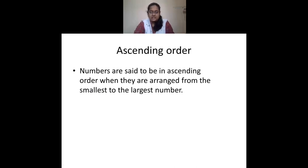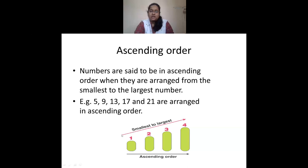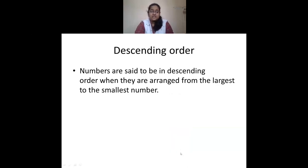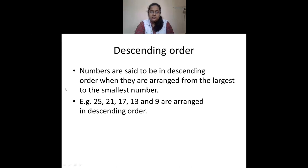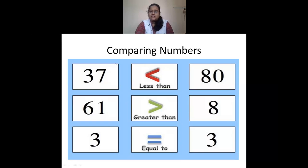We saw ascending and descending order. Ascending order: numbers arranged from smallest to largest. For example, 5, 9, 13, 17, 21 are in ascending order. Descending order: numbers arranged from largest to smallest. For example, 25, 21, 17, 13, 9 — arranged from greatest to smallest — is descending order.